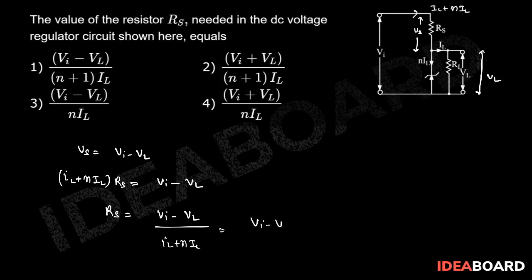Taking IL common, we can write it as (VI minus VL) divided by (N plus 1) times IL. So option number one is the correct answer to this problem.